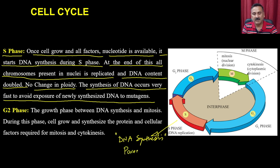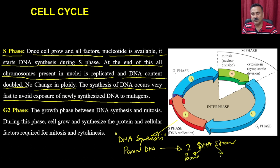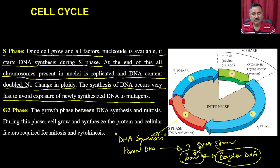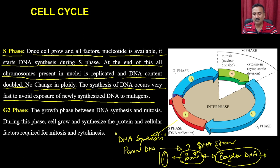DNA synthesis proceeds from pre-existing copies. A parent DNA enters and gives rise to two DNA strands. Since DNA replication is semi-conservative, each resulting DNA strand contains one strand from the parent DNA and one newly synthesized strand. At the end of the S phase, the DNA content is 2X — it does not change the ploidy of the cell, it only increases the DNA content.